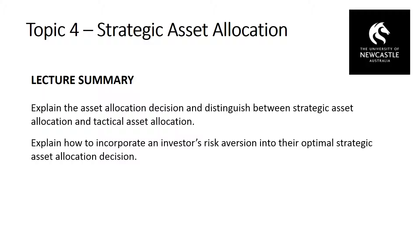The optimal strategic asset allocation for a highly risk averse investor will contain a greater proportion in low-risk or defensive asset classes, whereas a low degree of risk aversion leads to higher exposure to more aggressive asset classes such as equity. We can think of the basic asset allocation decision as allocating across a risky portfolio — say equities — and the risk-free rate. This is the capital allocation line in the capital asset pricing model. All portfolios on that line provide the same utility for the average investor, but individual risk aversion means different investors will prefer different points along that line.